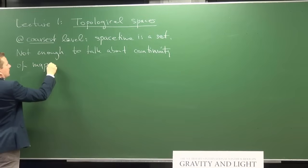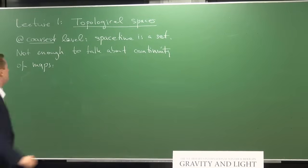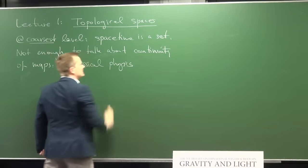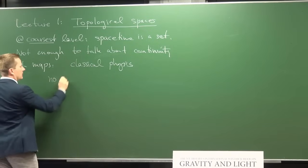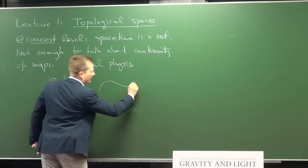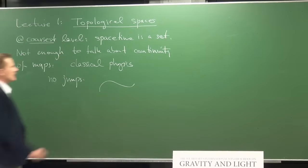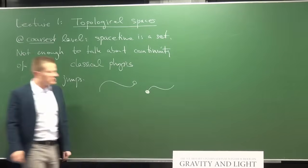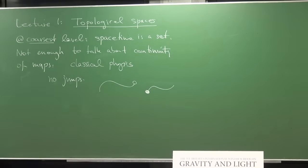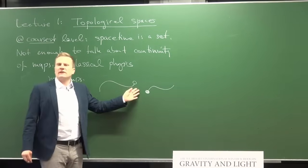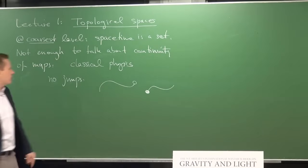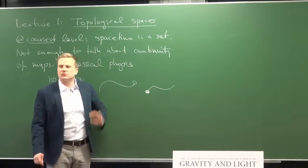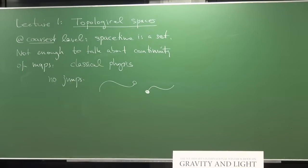Why do we want as physicists to talk about continuity of maps? In classical physics we have this idea that curves do not jump. If you have a curve — some particle running somewhere — we do not have the situation that all of a sudden there is a jump and the trajectory of a particle continues in a totally different place. So we need to require continuity of curves. A set is not enough structure to be able to talk about curves being continuous or not.